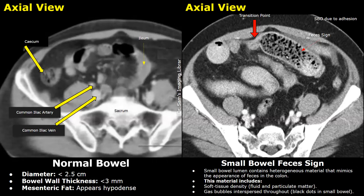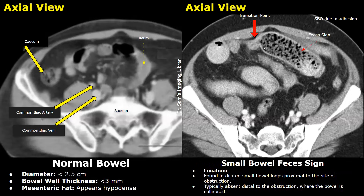This sign is seen in some cases of small bowel obstruction. The small bowel feces sign is present proximal to the transition point and it is absent distal to the transition point. This is the transition point, and you can see normal collapsed bowel distal to this point.